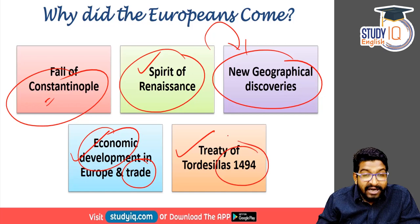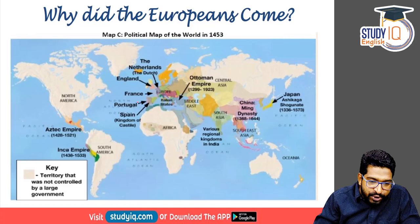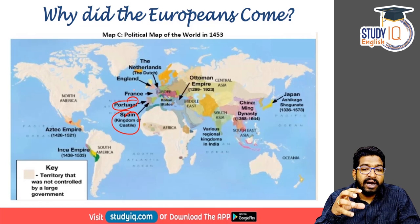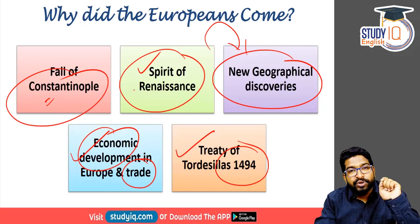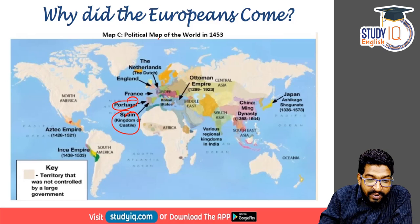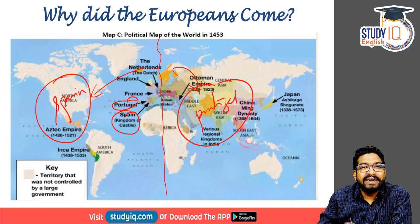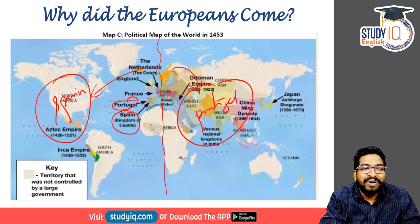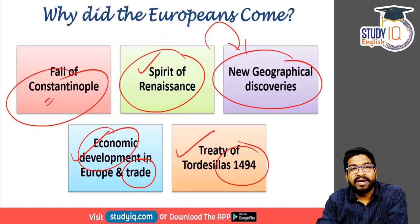The Treaty of Tordesillas was signed in 1494 — a very important treaty explaining why the Spanish did not come to India. In the 16th century, the two most prominent powers were Portugal and Spain because they had navies and naval power. In 1494, both signed the Treaty of Tordesillas, dividing the world along the Atlantic Ocean: Spain would venture toward the Americas, and Portugal would venture toward the Asian side. So Spanish voyages went toward North America, while Portuguese voyages headed toward the eastern, Asian side.